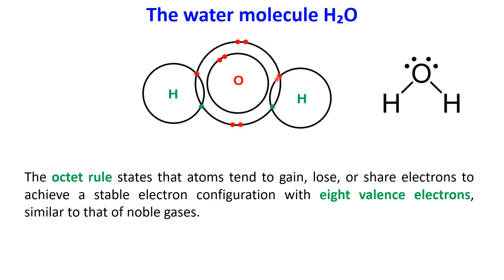Hydrogen, however, follows a simpler rule. It only needs two electrons in its outermost shell to be stable, which it achieves by sharing one electron with oxygen. This sharing of electrons is what forms covalent bonds, stabilizing the water molecule and holding it together.